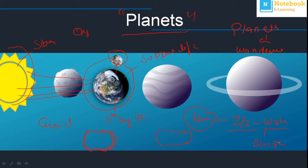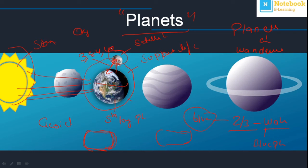Now let's talk about the Moon. The Moon is a satellite of the Earth. Its diameter is one quarter of the Earth's diameter. The distance of the Moon from the Earth is about three lakh eighty-four thousand four hundred kilometres — 384,400 km — which is very far from our Earth.